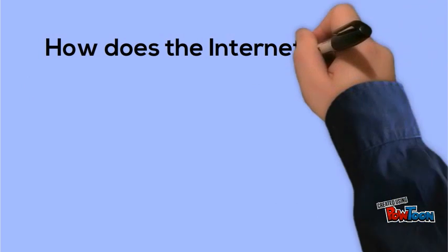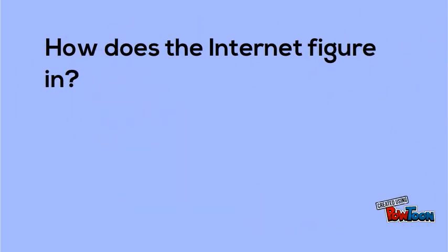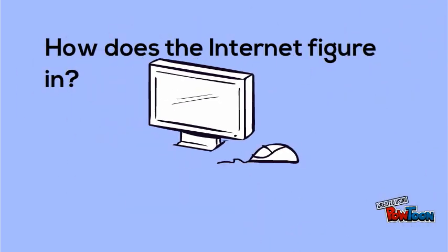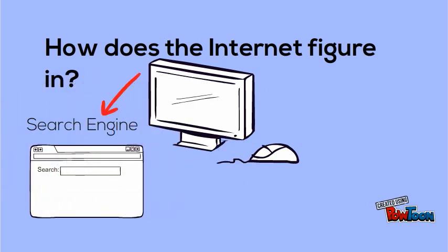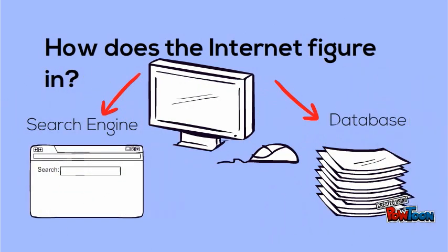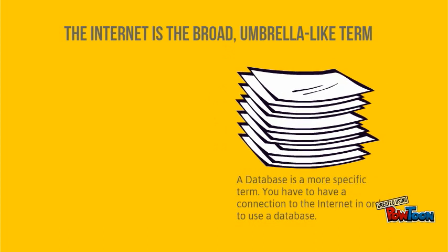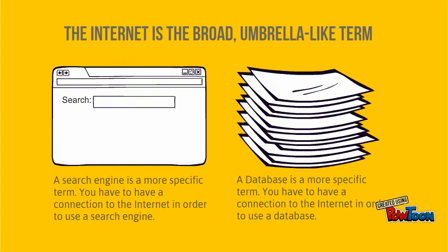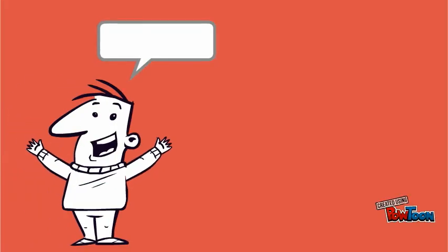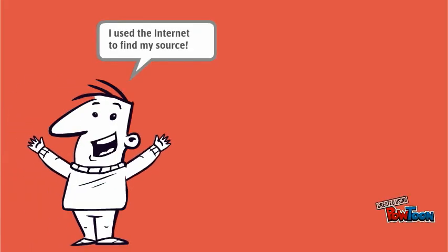Now, how does the Internet figure into this? A connection to the Internet is necessary to use both a search engine like Google and a database like ProQuest. The Internet is a broad, umbrella-like term, and databases and search engines fall under that broad term as more specific identifiers. So, if you say you've used the Internet to locate a source, you haven't really said much at all.